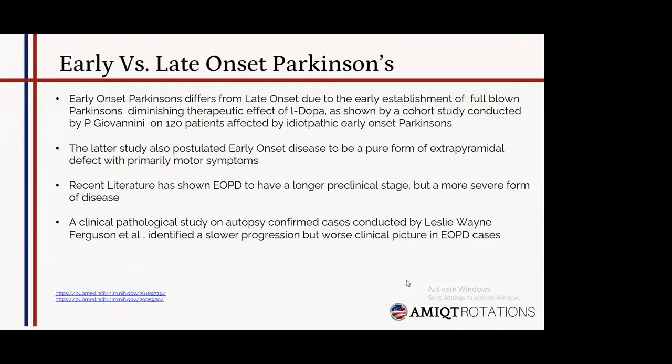Early onset Parkinson's differs from late onset in several ways, including earlier establishment of full-blown Parkinson's and diminishing therapeutic effects of L-DOPA. A cohort study by P. Giovanni on around 120 patients with idiopathic early onset Parkinson's postulated that early onset disease is a pure form of extrapyramidal defect with primarily motor symptoms. Recent literature has shown that EOPD has a longer preclinical stage but a more severe form of disease. A clinical-pathological study by Leslie Wayne Figureson et al. identified slower progression but a worse clinical picture in EOPD cases.